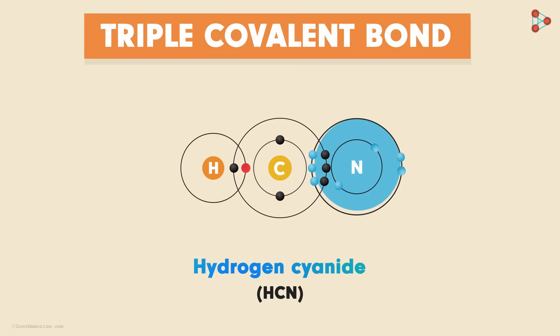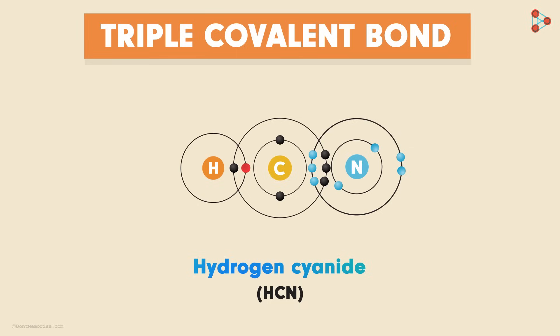One carbon atom is attached to one hydrogen atom and one nitrogen atom. The valency of hydrogen is 1, so 1 electron of carbon is shared with the hydrogen atom. Moving to the other side, the electronic configuration of nitrogen is 2, 5 — that means it needs 3 electrons to complete its octet. And the carbon atom shares its remaining 3 electrons with nitrogen. Since sharing involves electrons from both atoms, nitrogen also contributes 3 electrons, giving 6 electrons shared between these two atoms. Thus, 3 pairs of electrons give rise to a triple covalent bond between the carbon and nitrogen atoms.